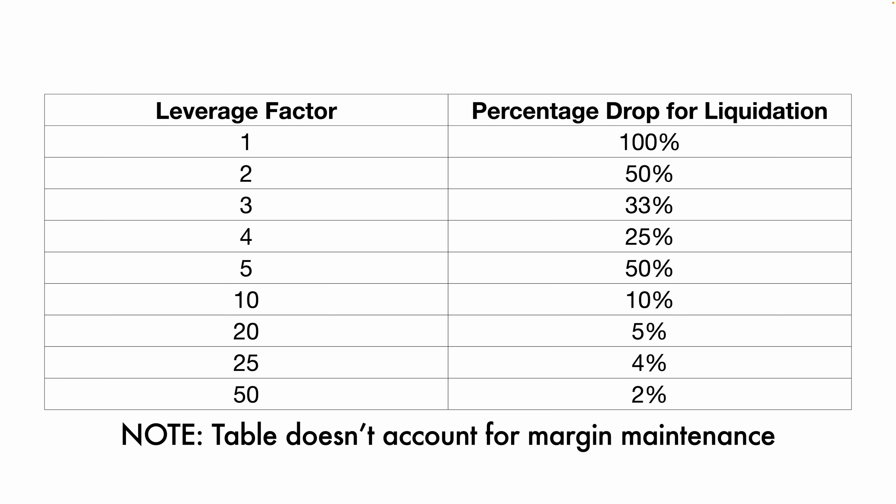Here's a table that shows the leverage factor and the percentage drop that would get you liquidated. This table doesn't include margin requirements, as each exchange is different. To get these numbers, all you're doing is taking 100% and dividing it by the leverage factor to give you the estimated price drop for liquidation.